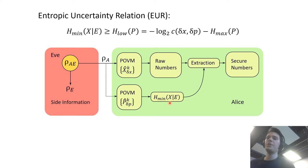We'll estimate with this EUR a lower bound on the conditional min entropy of X. And then when we measure X we'll get some raw numbers from our measurement and we can extract the correct number of secure random numbers from the estimate that we get of the min entropy.